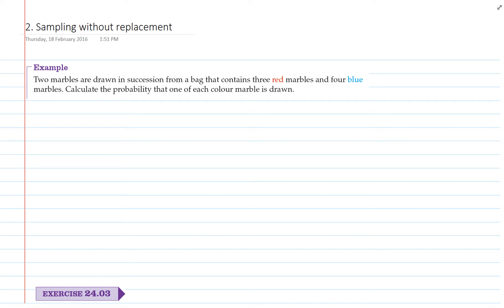Hi everyone, here we're going to talk about sampling without replacement. When we're talking about that, we're simply talking about what happens when we take something away and that affects our probabilities.